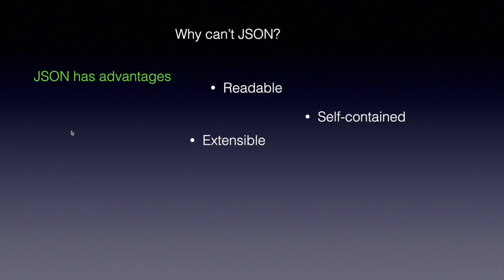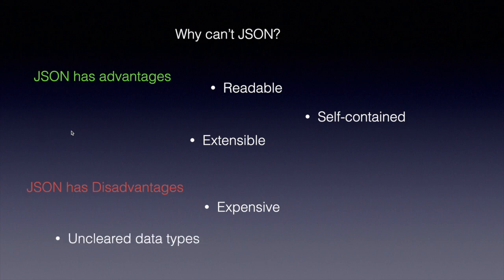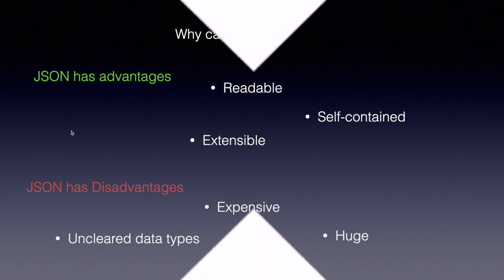JSON also has disadvantages. First, it's very expensive — in case of high volumes of data, the JSON object consumes a lot of system resources. Secondly, unclear data types: you cannot define specific data types in a JSON document, which is a problem for applications that need type-specific data. And JSON messages are bigger in size — even when the actual content is small, the JSON message size is much larger, creating a lot of overhead.